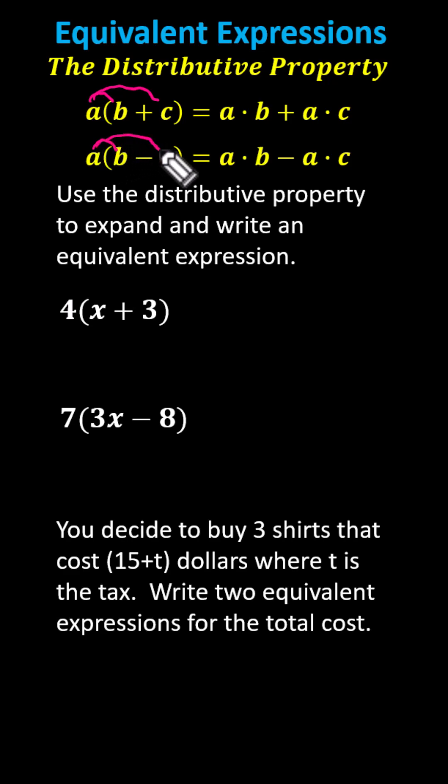For the first two examples, we're asked to use the distributive property to expand and write an equivalent expression. First we're given the expression four times the quantity X plus three. To expand and write an equivalent expression, we distribute the four, which will give us four times X plus four times three.